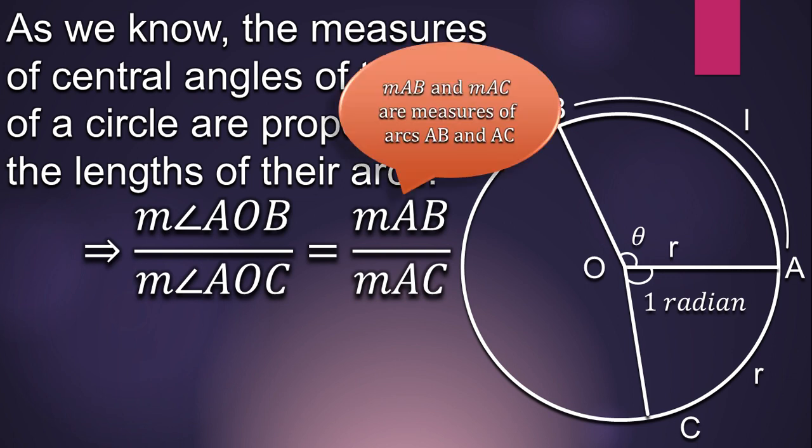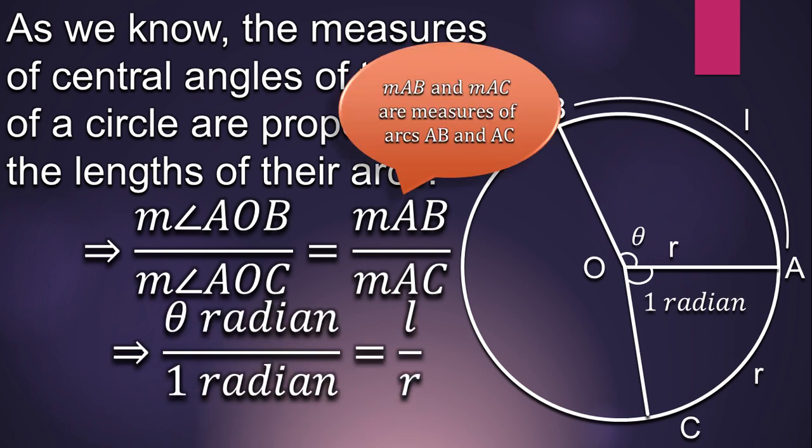Now putting the actual values here, we get theta radian by 1 radian equals L by R.